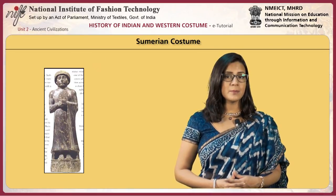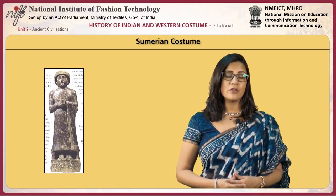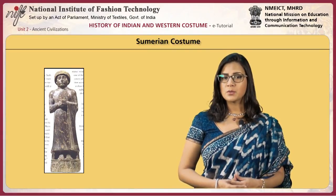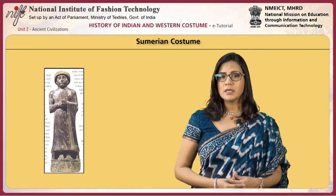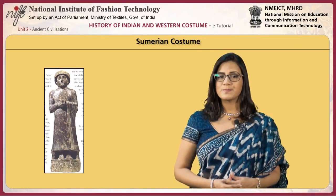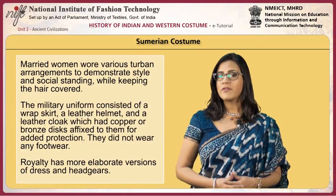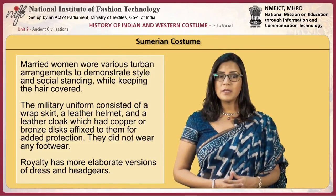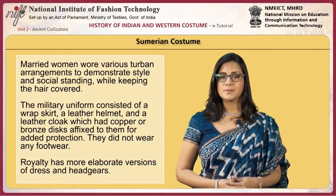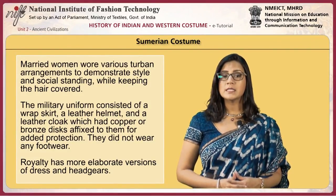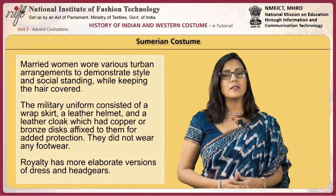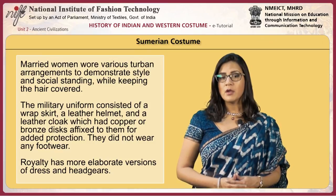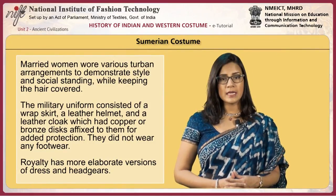Women are often depicted wearing elaborate coifers and wigs rather than hat styles. Unmarried women wore a large rolled band with an open crown and hair open over the shoulders. Married women wore various turban arrangements to demonstrate style and social standing while keeping the hair covered. The military uniform consisted of a wrap skirt, a leather helmet, and a leather cloak with copper or bronze discs affixed for added protection. They did not wear any footwear.